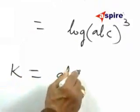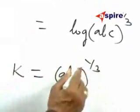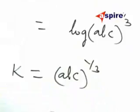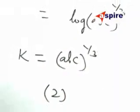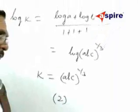Therefore, K will be equal to ABC to the power 1 by 3, or choice 2 is correct. Alright, go ahead and look. Thank you.